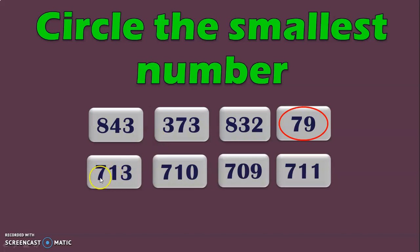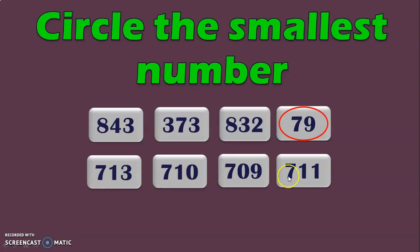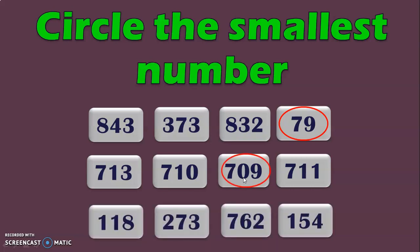Next, we have 4 numbers: 713, 710, 709 and 711. First, look at the hundreds place — it has the same number 7 in all 4 numbers. So next, move on to the tens place where you have 1, 1, 0 and 1. We know that 0 is lesser than 1. With that, you can conclude that 709 is the smallest number in the given series.